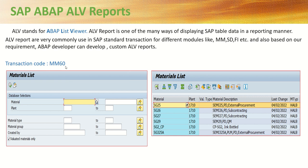The transaction code here is LM60 and the description is a material list. On the left-hand side, we can see the selection screen with different fields like material, plant, model type, model group, and graded by. Based on our requirement, we enter the selection criteria and click the execute button. The system then selects data from different SAP tables, performs the required logic, and displays the data in the output format.